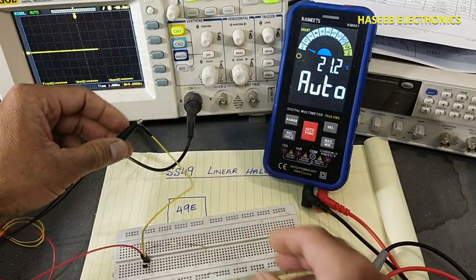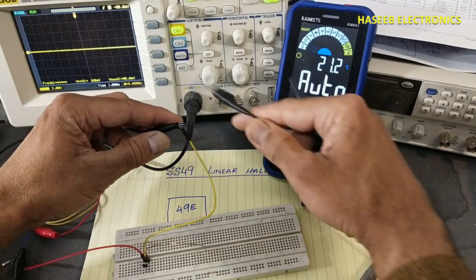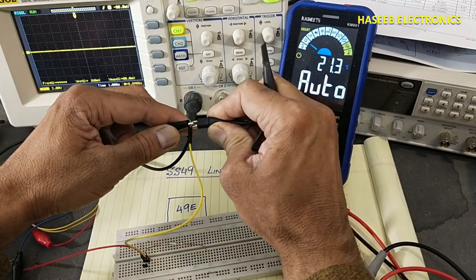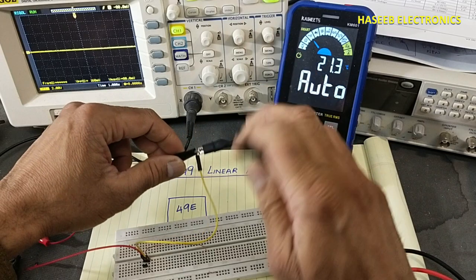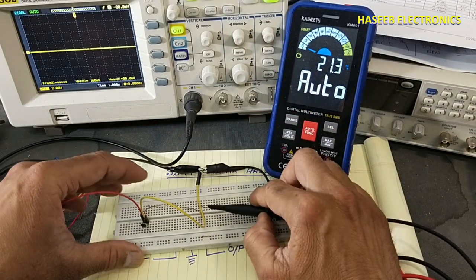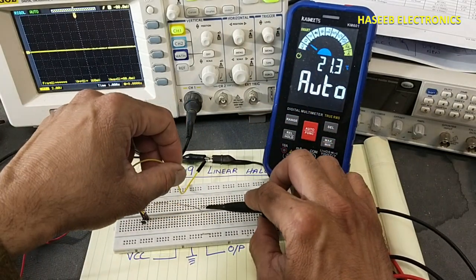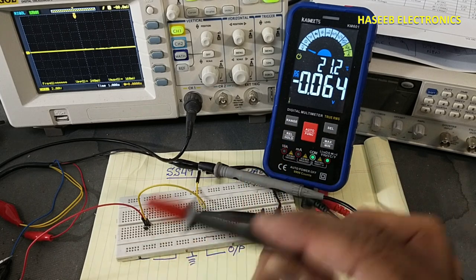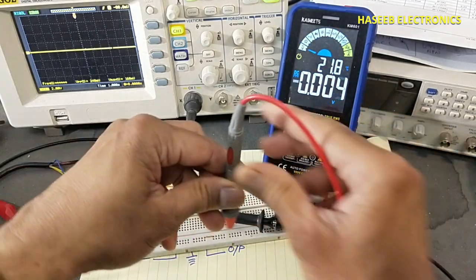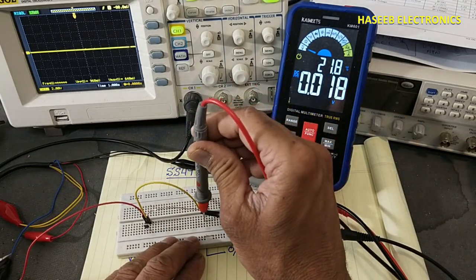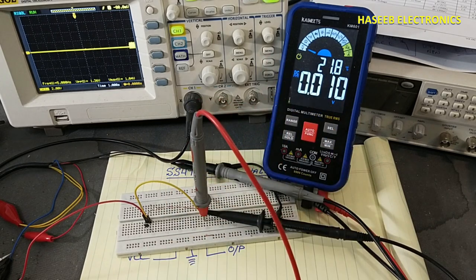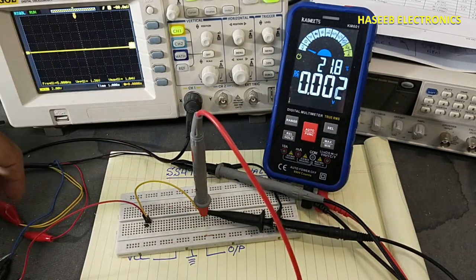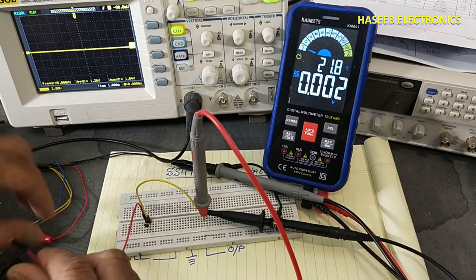Ground here, we will connect oscilloscope common with this ground, oscilloscope and oscilloscope signal here. Multimeter common with ground and positive with the signal out.